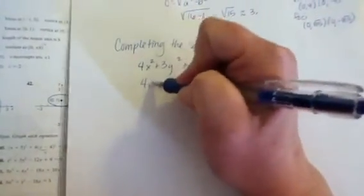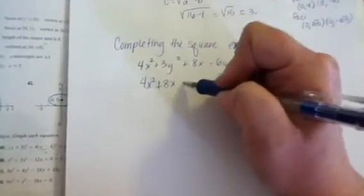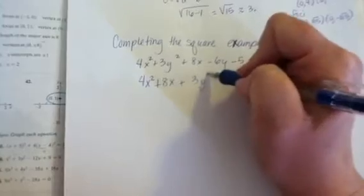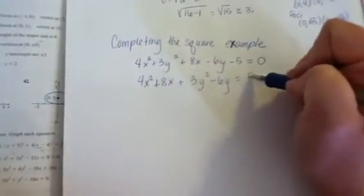So we're going to start by putting the x values together. So there's 4x squared and then 8x, and then we have 3y squared and 6y, and I'm going to move that 5 to the other side.